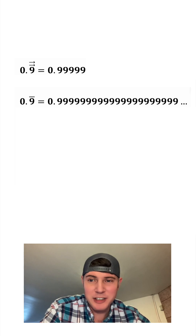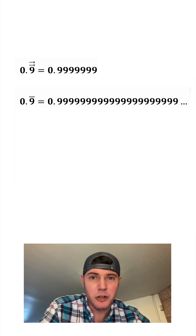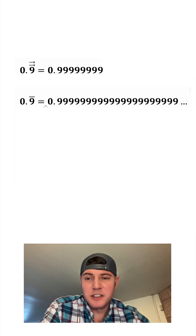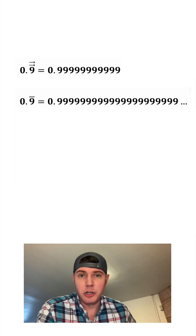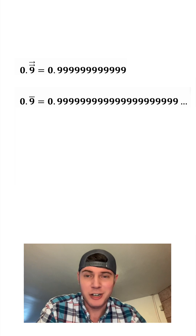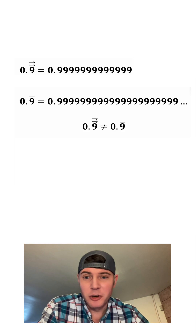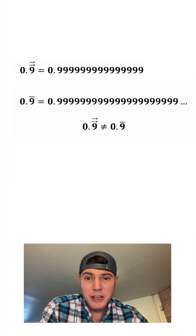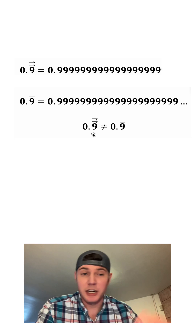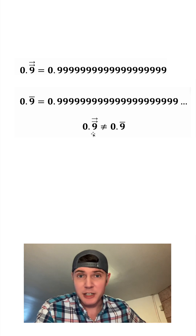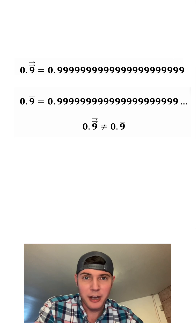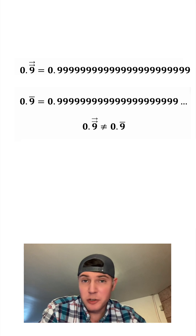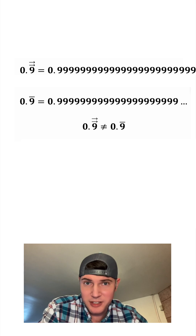This looks a lot like 0.9 bar, or 0.9 recurring. The difference is that with 0.9 bar, the nines are already there — there is no accumulation occurring. So it's important to note that my 0.9 dub arrow does not equal 0.9 bar. It will never reach it; it'll approach it, but it will never have the infinite nines that 0.9 bar has. So here's the reason I want to do this thought experiment.